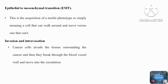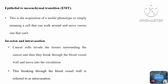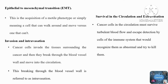The next step is survival in the circulation. Cancer cells in the circulation must survive turbulent blood flow and escape detection by cells of the immune system. Otherwise, the immune system recognizes them as abnormal or foreign bodies and tries to kill them. Many cancer cells are killed in the circulation as they try to survive the turbulence.